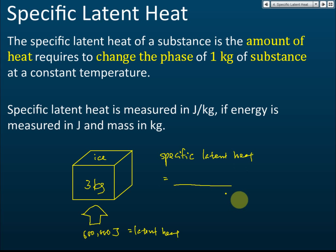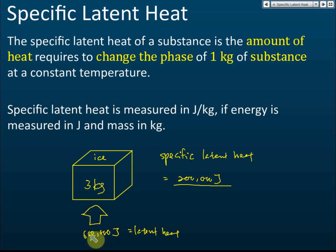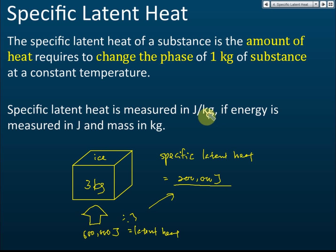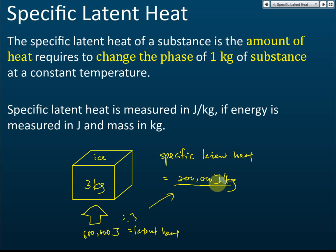The specific latent heat is 200,000 joules — that's correct. 600,000 joules for three kilograms means 200,000 joules for one kilogram. We take 600,000 divided by three, and we get 200,000. So specific latent heat is for one kilogram of the substance, and it's measured in joules per kilogram. Latent heat is just joules, but specific latent heat is joules per kilogram.